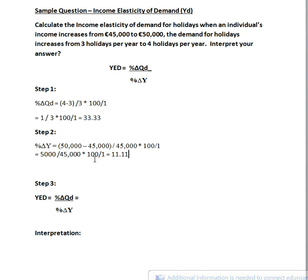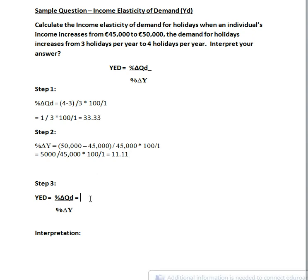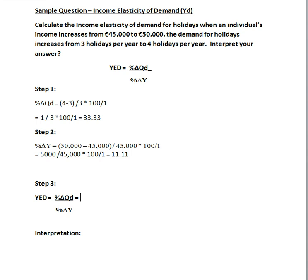That works out to be 11.11%. So what we know is that income has gone up by just over 11 percent, and as a result the quantity demand for holidays has increased by just over 33 percent. Finally, step three is to substitute your values from step one and step two into the overall formula.